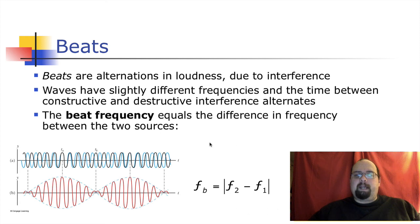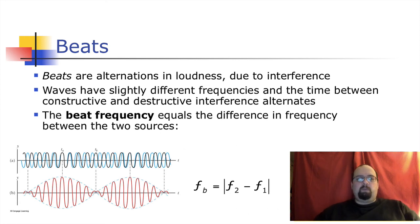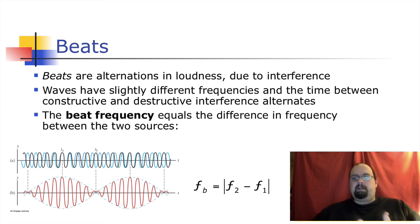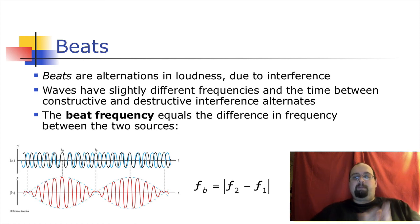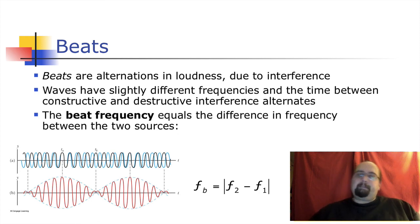Then this formula: the beat frequency equals |f₂ - f₁|. Which one is f₂ and which one is f₁ doesn't really matter — just take the absolute value of the difference. The difference between the two frequencies tells you how often you get a beat — the frequency of this new funky super wave.